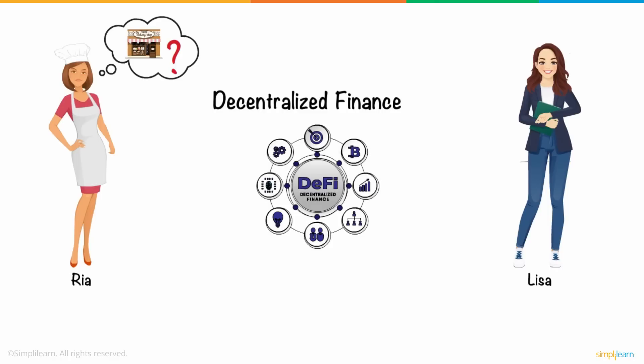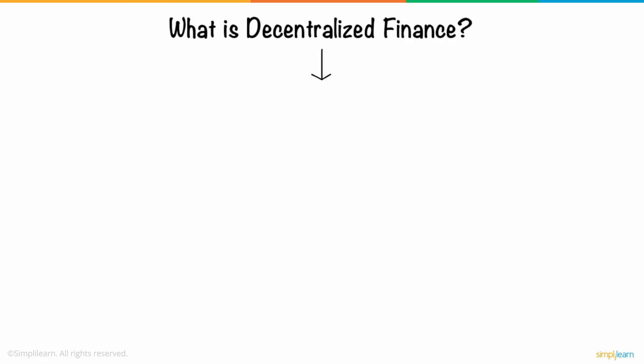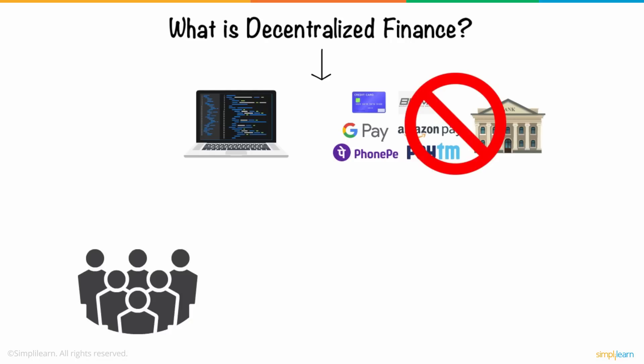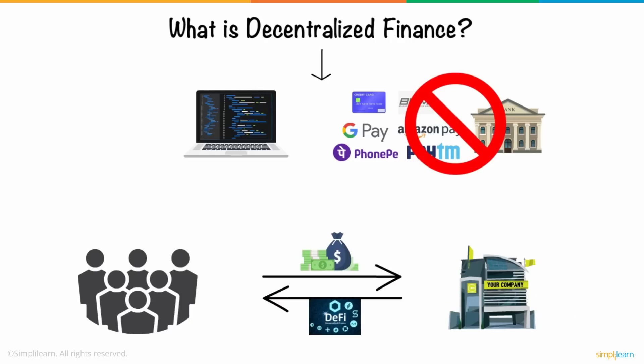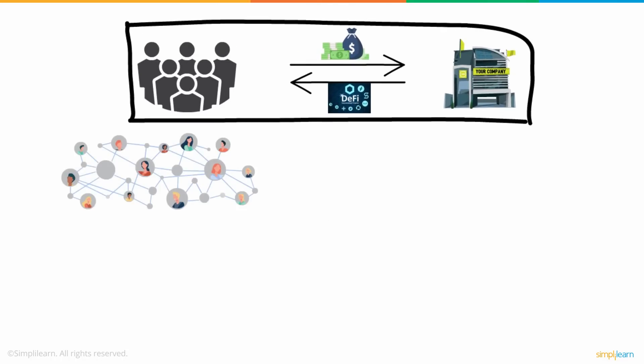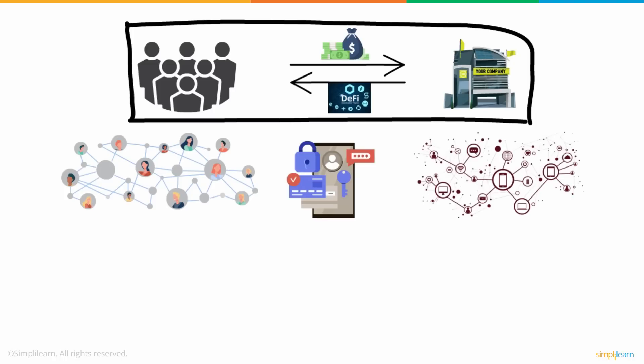Ria got a little confused by the term and asked, what is decentralized finance? Lisa answered that decentralized finance is a piece of code that eliminates middlemen or banks by allowing individuals, business merchants, and corporations to perform financial transactions using developing technologies.